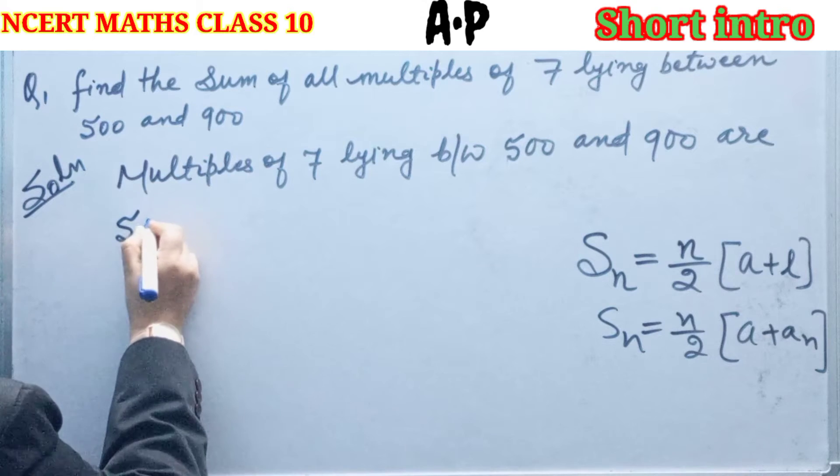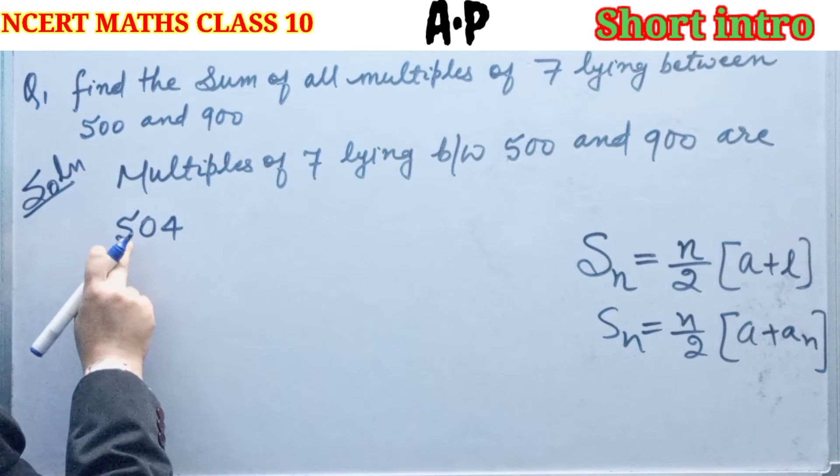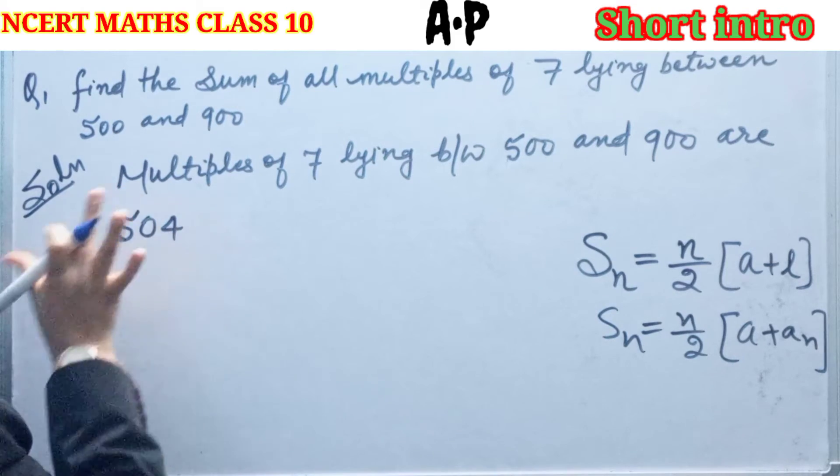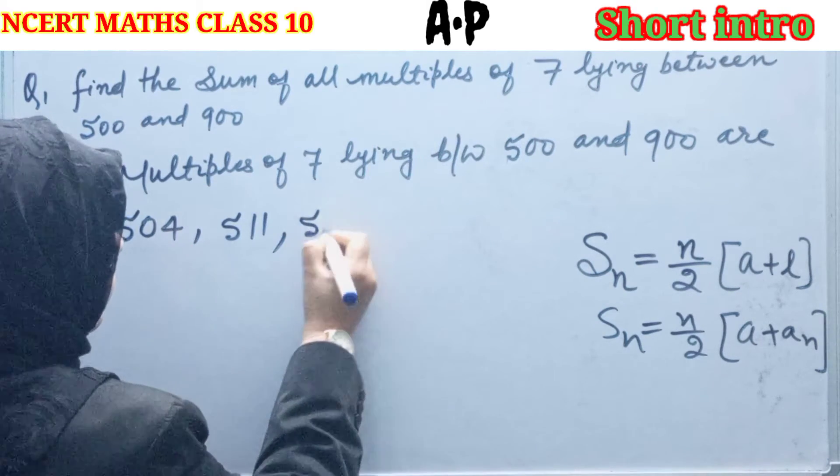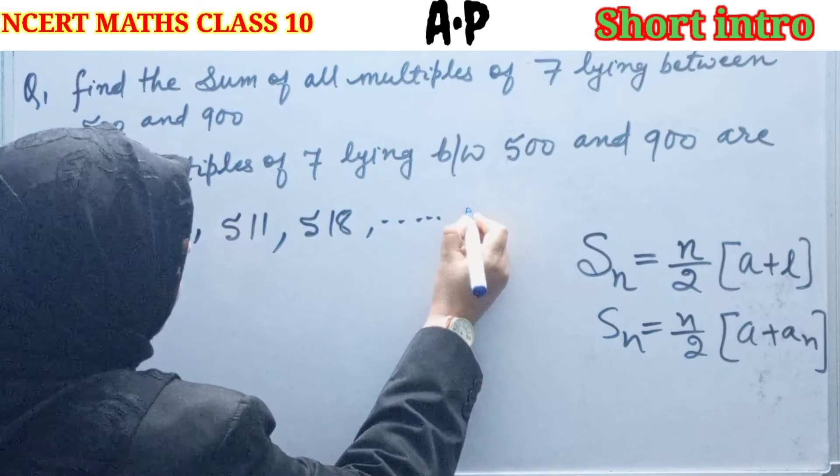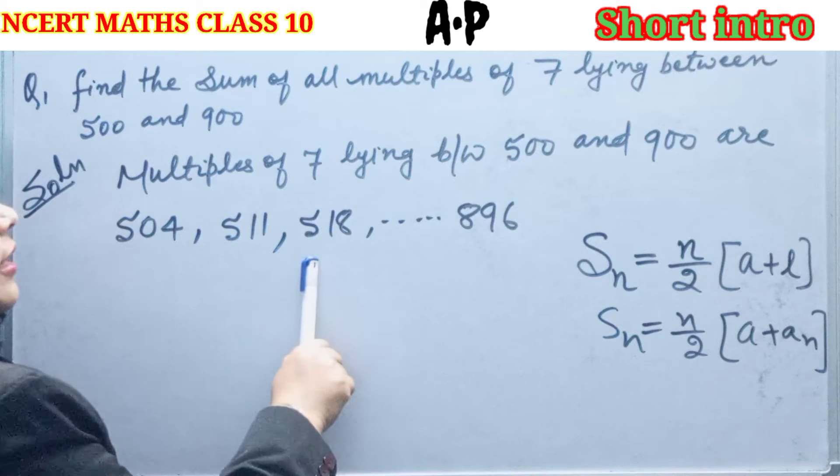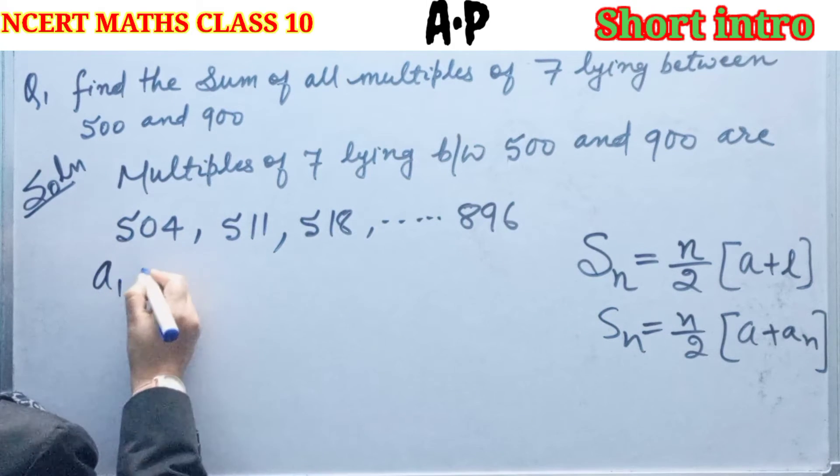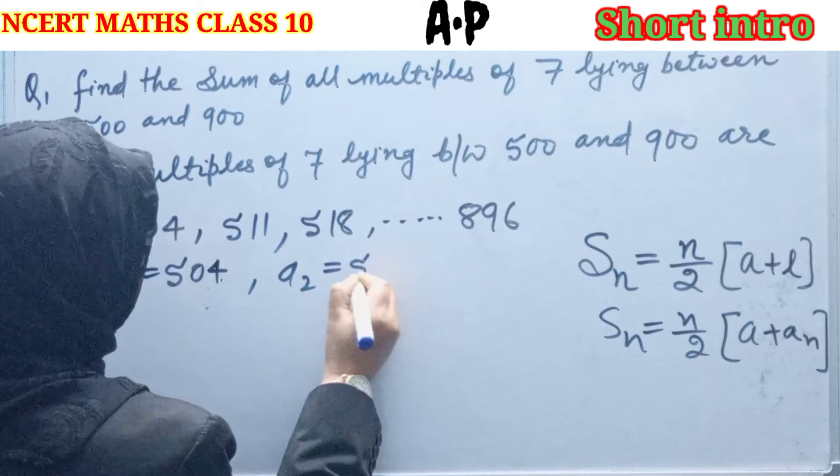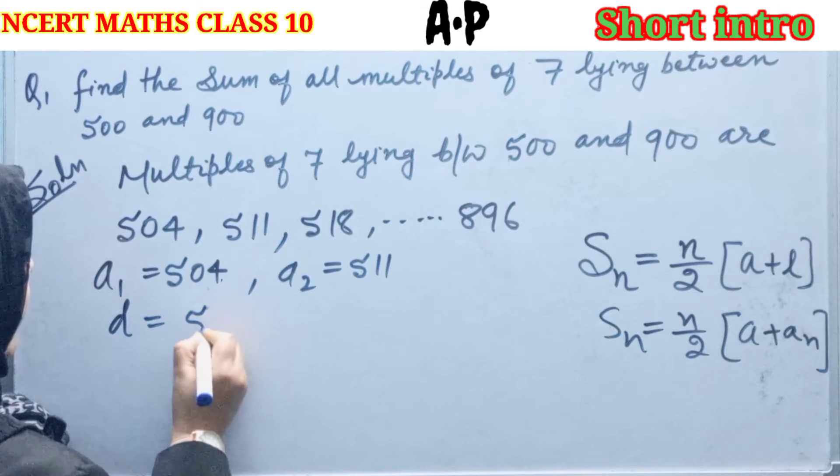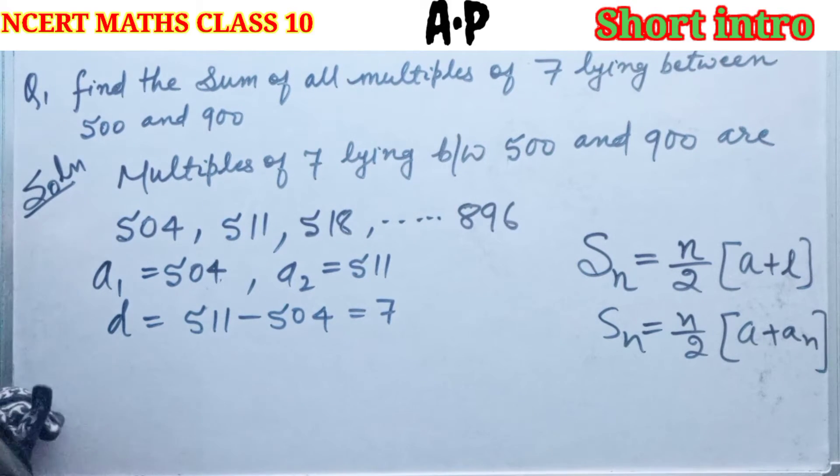Multiples of 7 lying between 500 and 900 are 504, then 7 more is 511, then 7 more is 518, and the last one is 896. These are the terms that lie between 500 and 900 that are multiples of 7. Now we can write A1 equals to 504. Common difference, obviously, is 7.